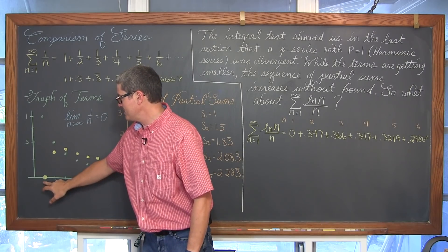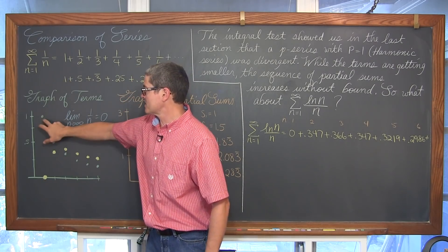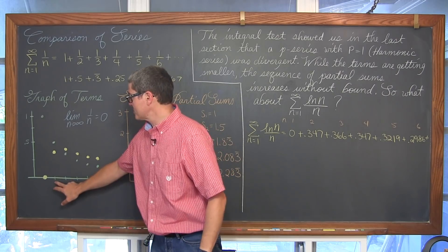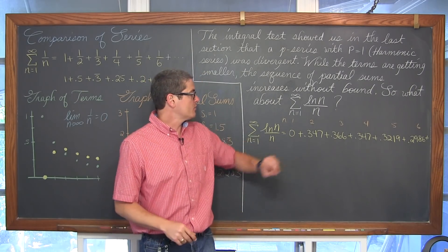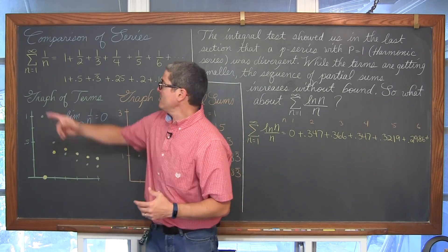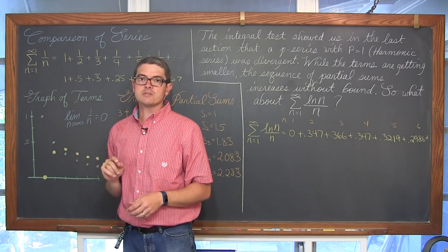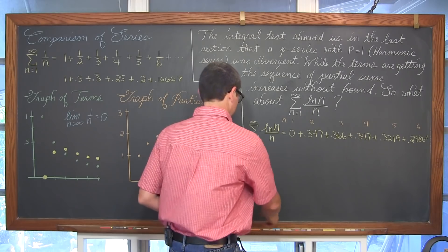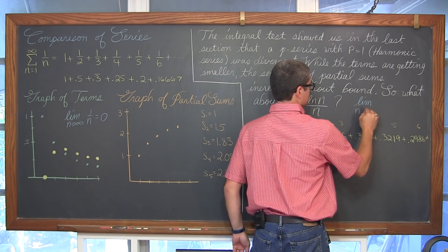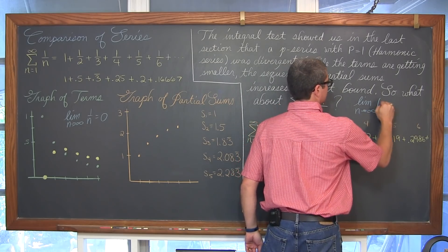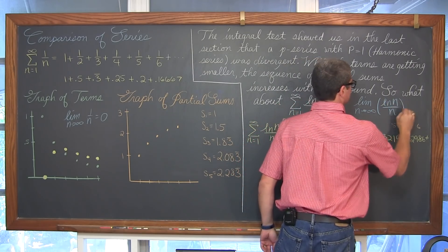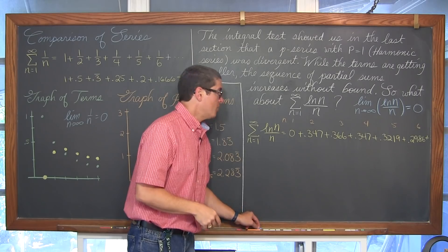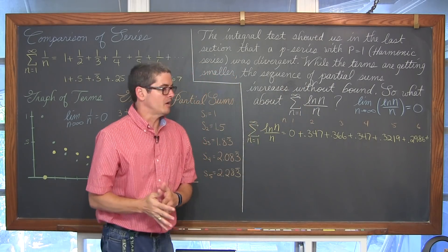Plotting the terms of our series on the same graph as the harmonic series: for n=1, the harmonic series gives 1, while this series gives 0. For n=2, we have 0.5 versus 0.347. The numerator here is the natural log of n. The limit as n approaches infinity of ln(n)/n equals 0 — you can use L'Hôpital's rule, taking the derivative of numerator and denominator separately.